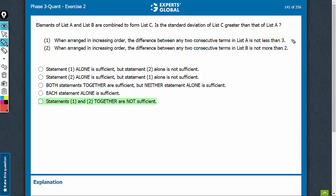Statement 1 talks about only list A and not list B, so cannot be sufficient. Statement 2 talks about only list B and not A, so cannot be sufficient. On combining,